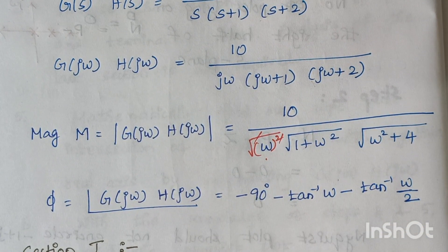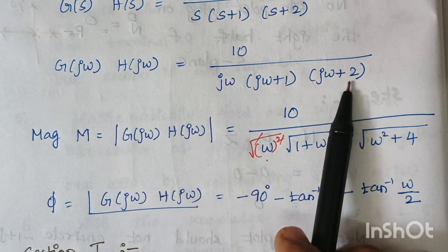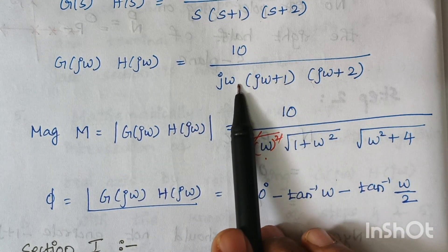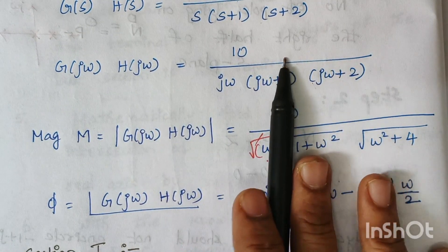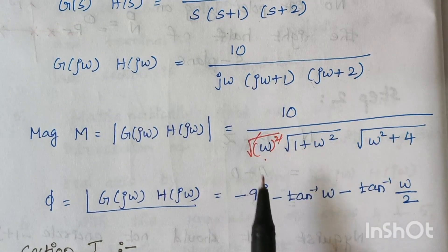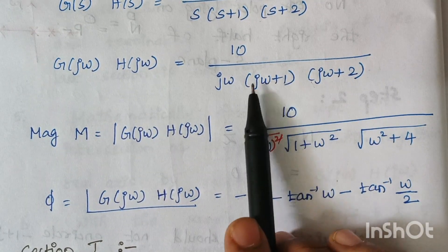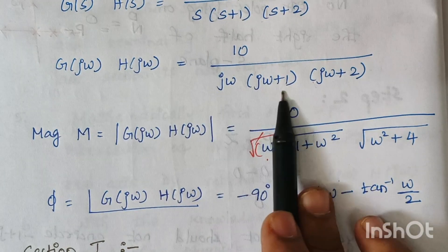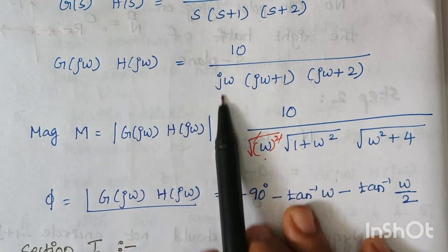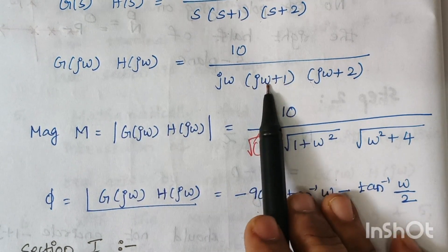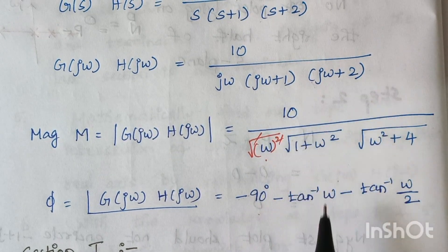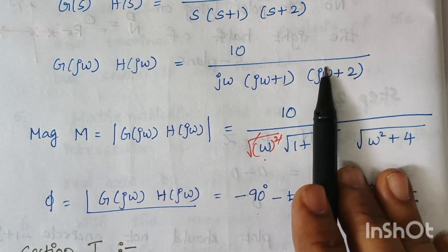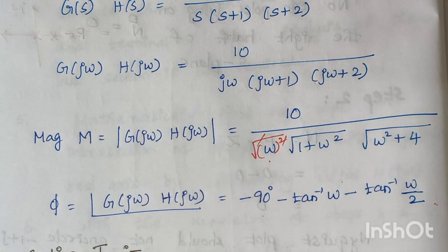For the phase angle: omega in the denominator contributes minus 90 degrees. Since omega is in the denominator we include a minus sign. The remaining denominator terms contribute: minus tan inverse of omega over 1, which is minus tan inverse omega, and minus tan inverse of omega over 2. So the phase angle is: minus 90 minus tan inverse omega minus tan inverse of omega by 2.